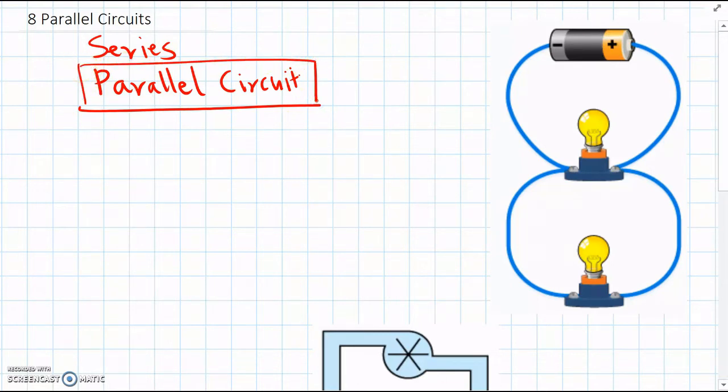So parallel circuits, which we can see here, are where part of the circuit is connected with an extra loop.